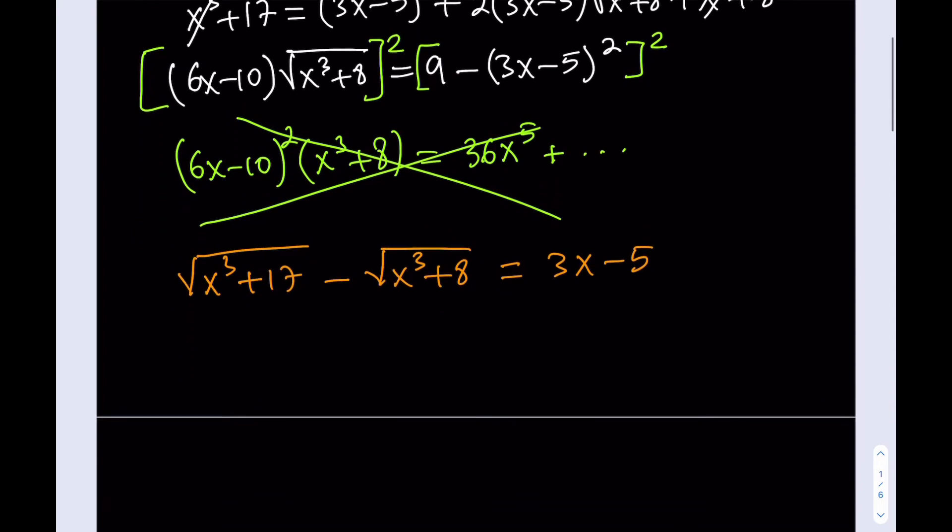One method that uses this is basically taking advantage of conjugates, right? Remember that? For example, if you have an expression like the square root of x squared plus 5x plus 1 minus the square root of x squared plus 5x plus 3, and it's equal to something else, it will make sense if you multiply this guy by its conjugate because then you will get rid of the radicals quickly, without squaring both sides. So in some cases it's meaningful.